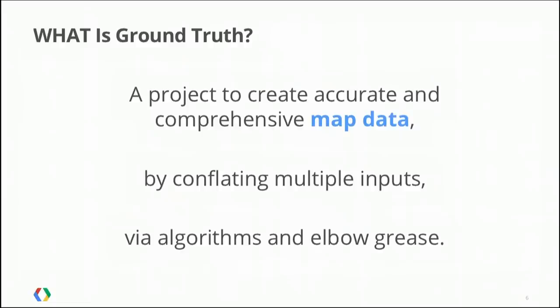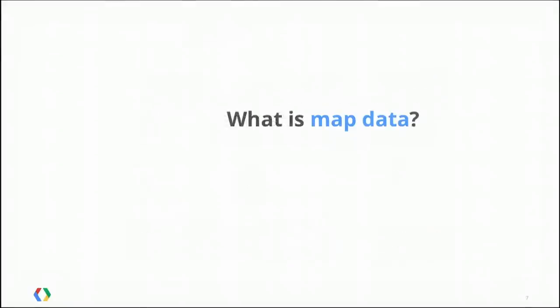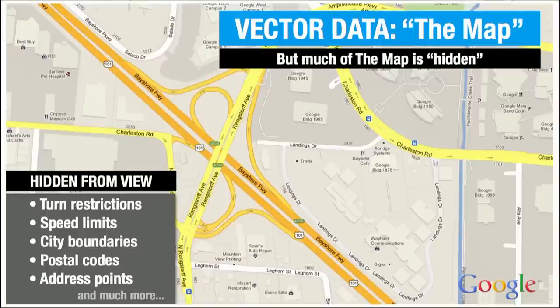What is Ground Truth? It's a project to create accurate and comprehensive map data by conflating multiple inputs by algorithms and elbow grease. For purposes of this talk, we define map data as the vectors on the map — basically everything you see on Google Maps that isn't an image: roads, postal codes, speed limits, city boundaries, everything that makes directions and search work. That's the data we're talking about creating.